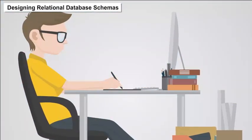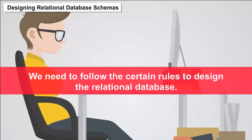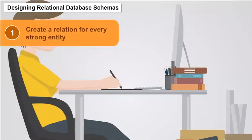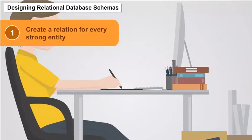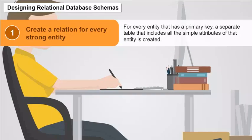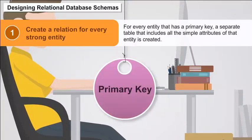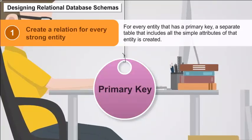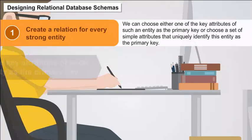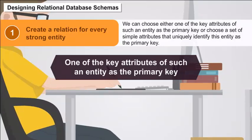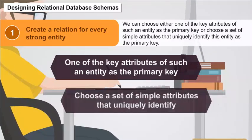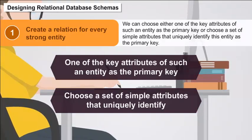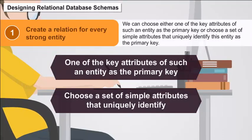Designing Relational Database Schemas — we need to follow certain rules. 1. Create a relation for every strong entity: for every entity that has a primary key, a separate table including all simple attributes of that entity is created. We can choose either one of the key attributes as the primary key or choose a set of simple attributes that uniquely identify the entity as the primary key.